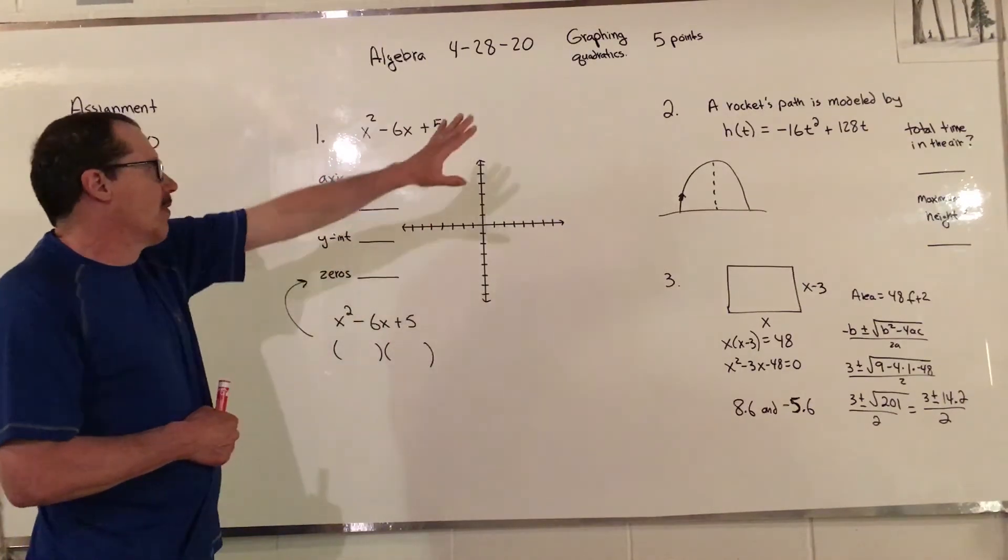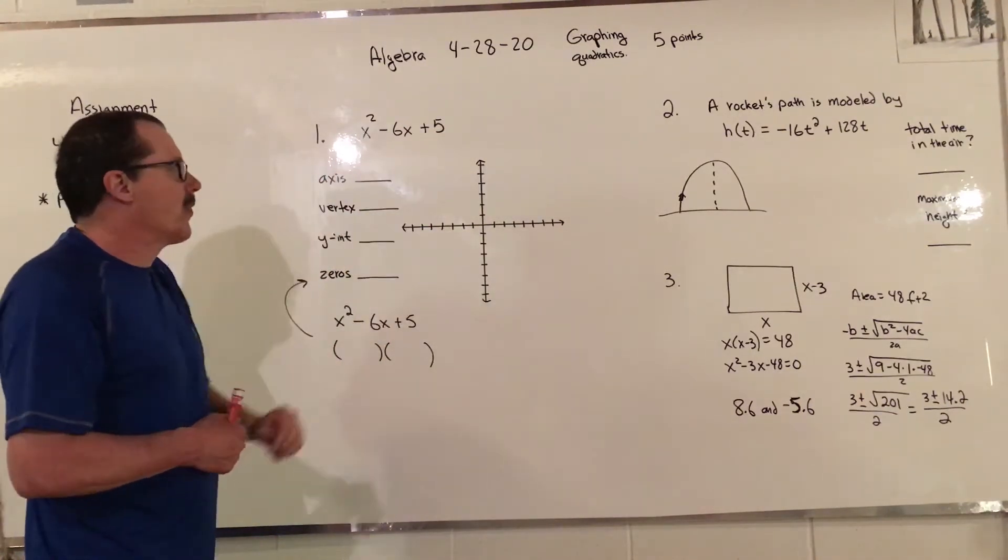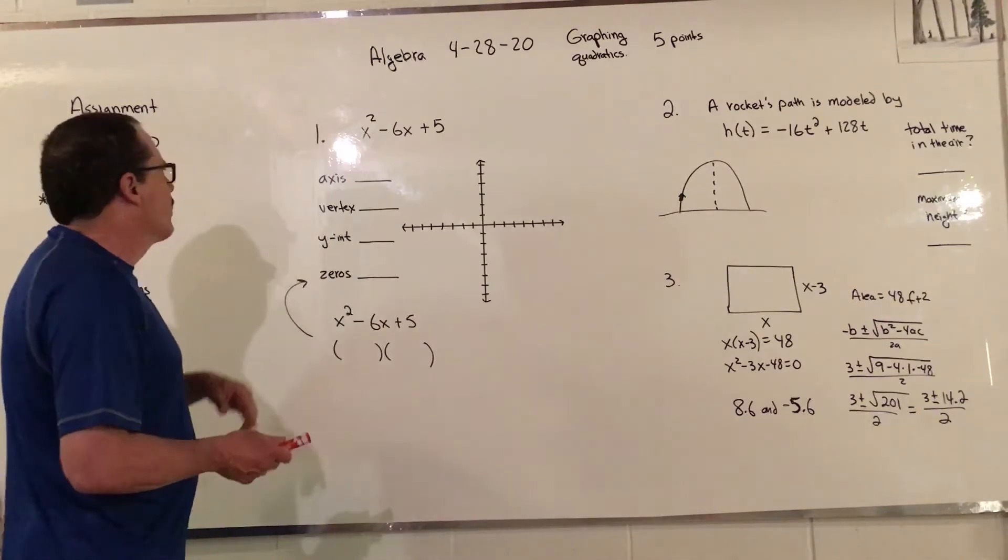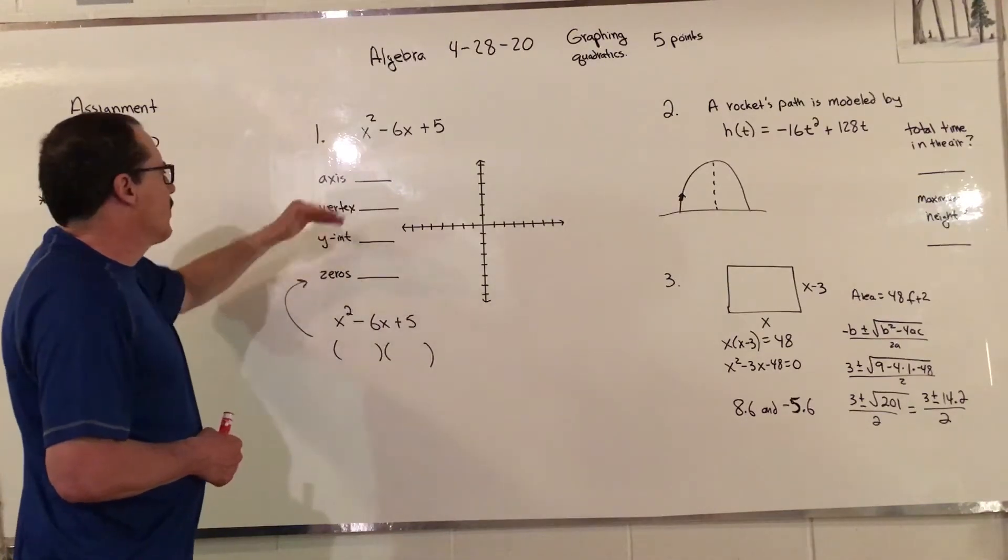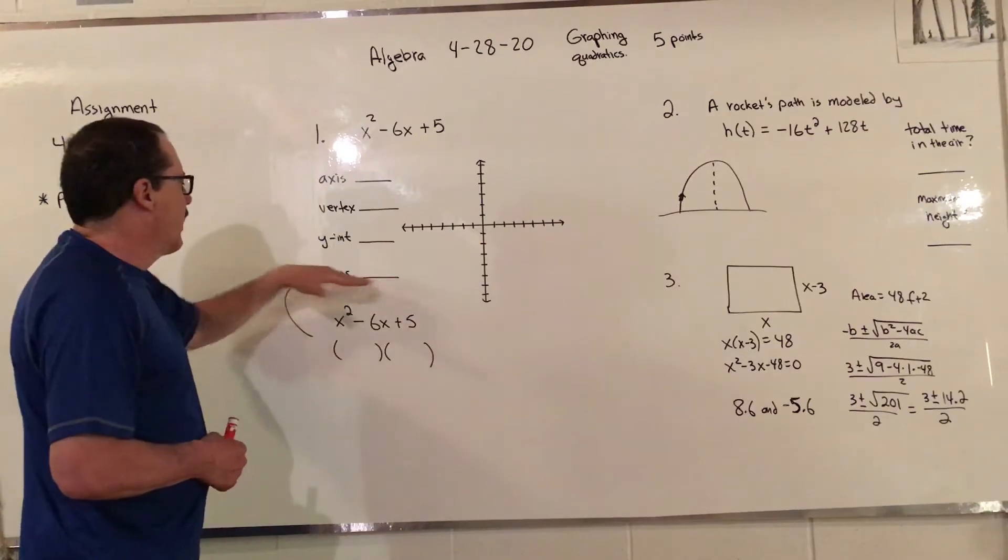For the graphing, we're going to come up with five points, not just three like we've been doing. We're going to find the axis and vertex and y-intercept like normal but we're going to add the zeros to it.